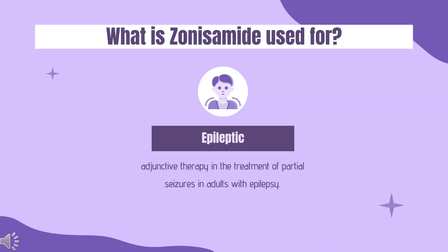What is zonisamide used for? Zonisamide capsules are indicated as adjunctive therapy in the treatment of partial seizures in adults with epilepsy. Zonisamide oral suspension is indicated as adjunctive therapy for the treatment of partial onset seizures in adults and pediatric patients 16 years of age and older.